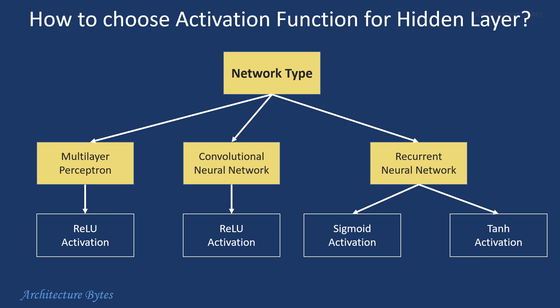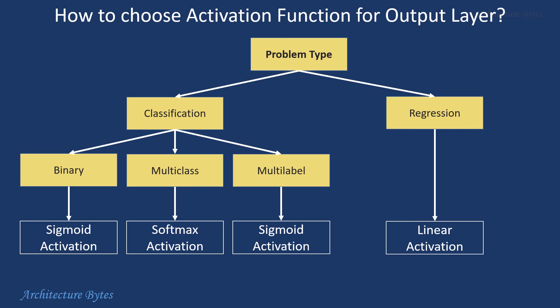The choice of activation function in the hidden layer depends on the network type. So for a convolutional neural network, you may choose ReLU activation function. And for a recurrent neural network, sigmoid activation. And in the case of output layer, you would choose an activation function based on problem type. So for binary classification, sigmoid. And for multiclass, softmax.